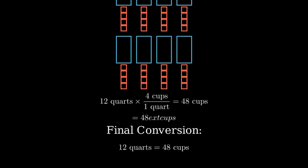This makes sense because each quart contains four cups, and we have 12 quarts, so 12 times four gives us 48 cups total.